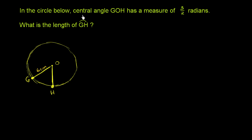In the circle below, central angle GOH has a measure of 3 halves radians. What is the length of arc GH?